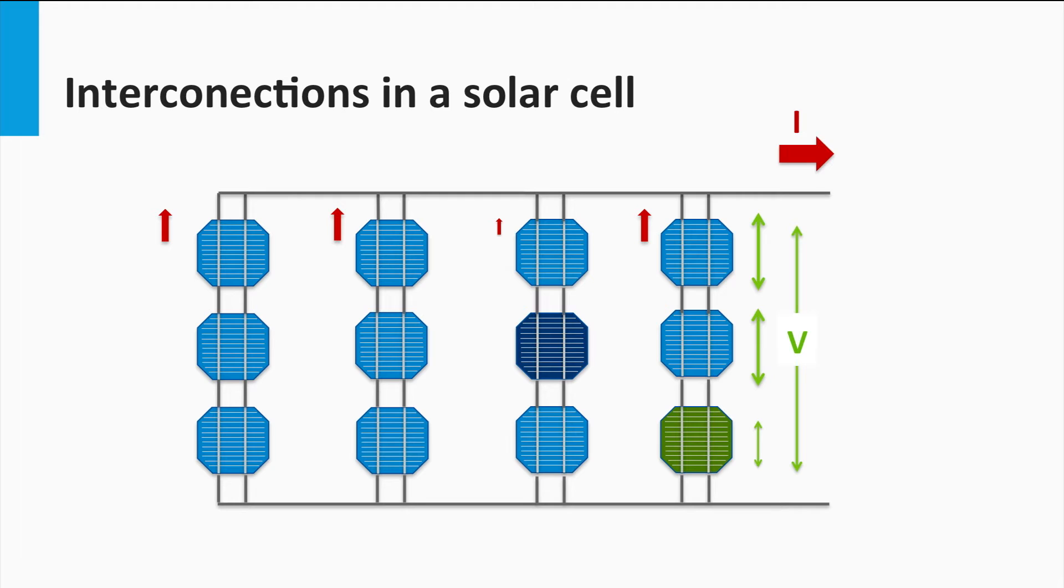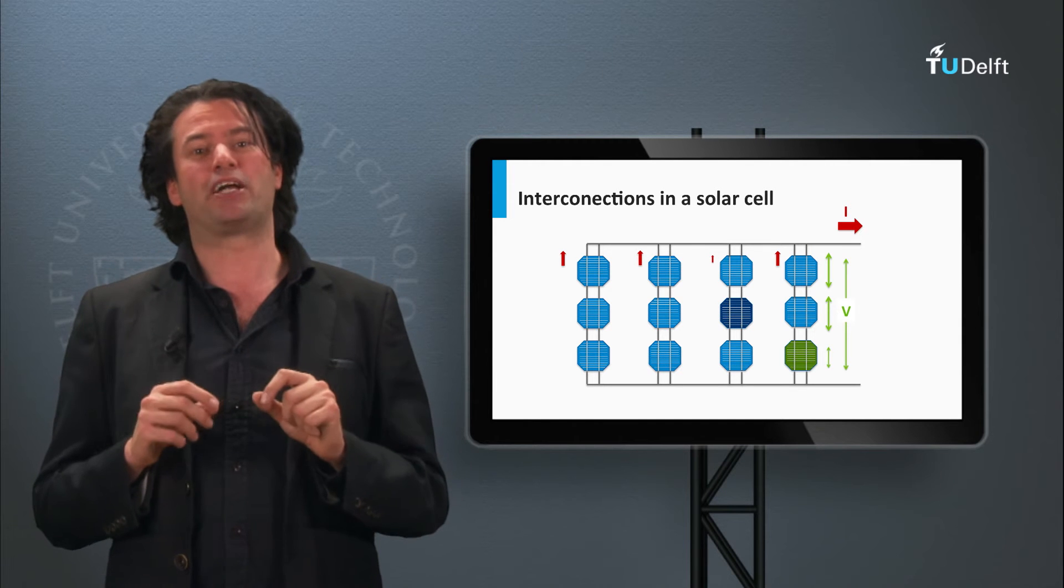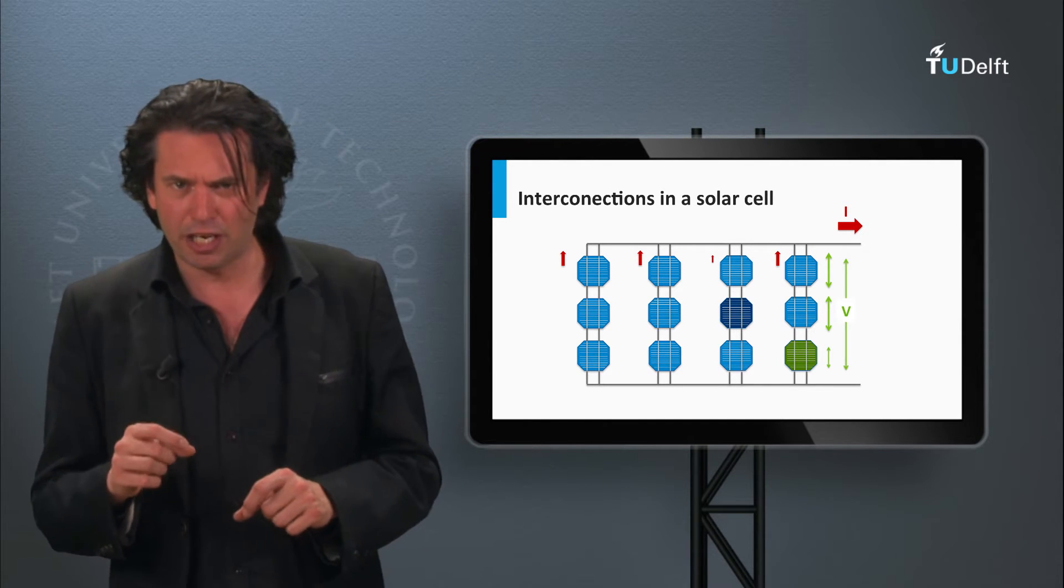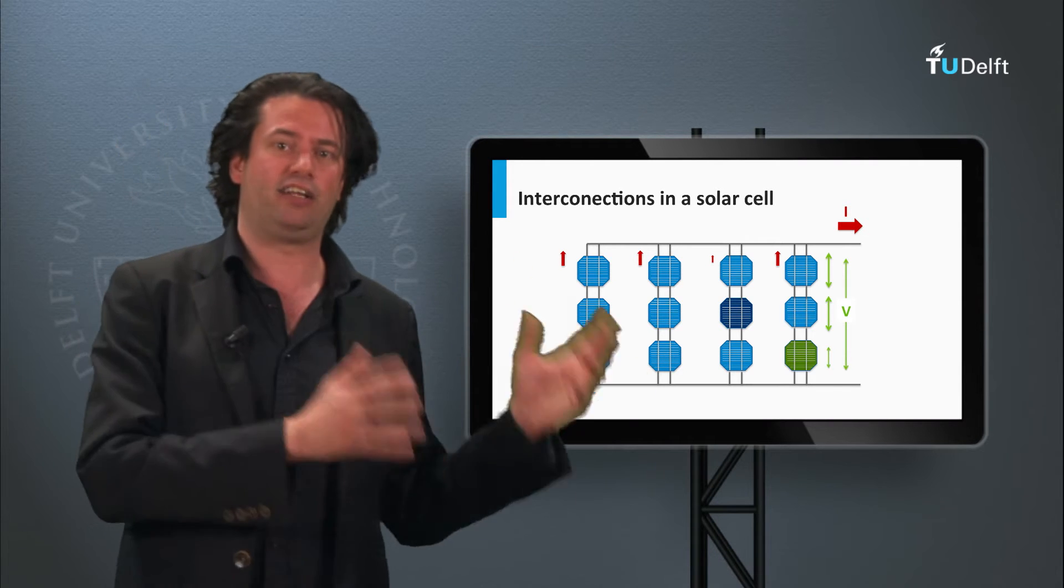In fact, if the module is undergoing variable illumination or non-uniform heating, the module performance is bound to get even worse. Even module manufacturers mention in their datasheets the difference between module and cell efficiency.